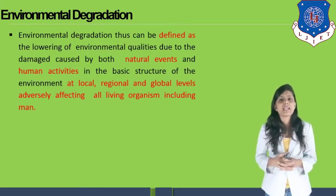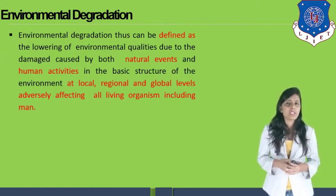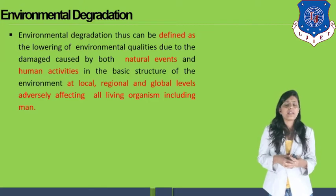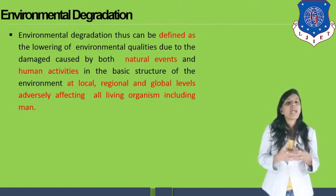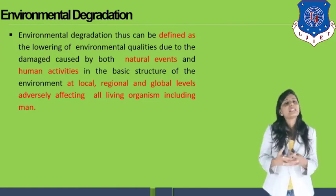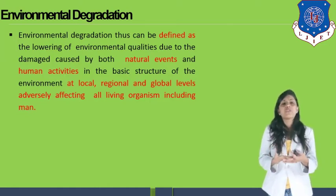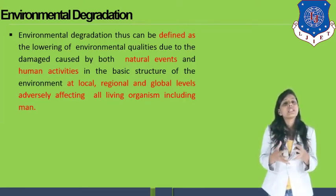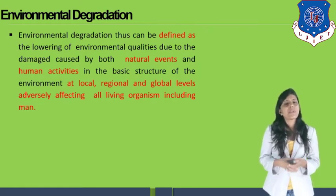Environmental degradation can be defined as the lowering of environmental quality due to damage caused by both natural events and human activities in the basic structure of environment at local, regional, and global levels, adversely affecting all living organisms including humans. All living organisms — not only us but animals too — are affected by environmental degradation. The degradation is also caused by natural activities: volcanoes, forest fires, and flooding are natural processes where environmental degradation occurs.